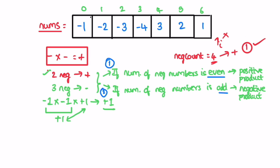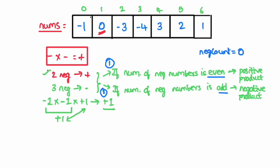You also need to handle the case where zero appears in the input array. For example, if one element is zero, the entire product becomes zero because anything multiplied by zero is zero. So as soon as you find a zero element inside the array, you can directly return 0 as the output. Now let's implement these steps in a Java program.